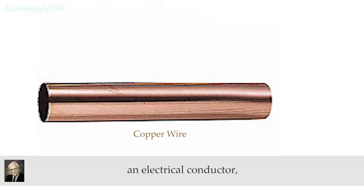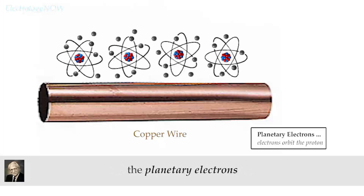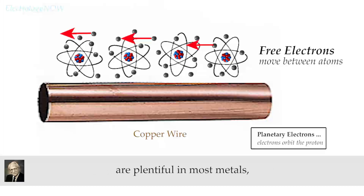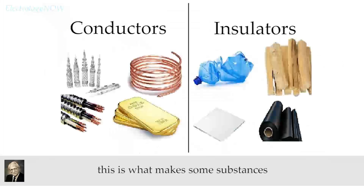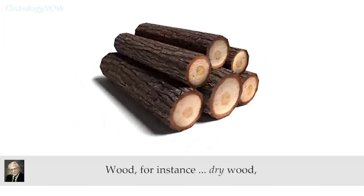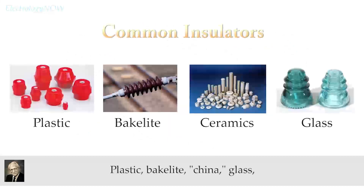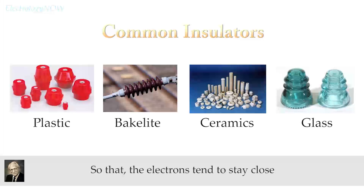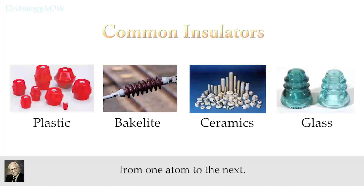On this slide, we're showing an electrical conductor as being a substance in which the planetary electrons move easily from one atom to the next. Such free electrons are plentiful in most metals and in carbon, which therefore are good conductors. This is what makes some substances conductors and some substances insulators. Wood — dry wood — is an insulator, as is plastic, china, and glass. They all have atoms which contain protons and electrons, but they are very tightly bound so that the electrons tend to stay close to the proton, and therefore they don't move easily from one atom to the next.